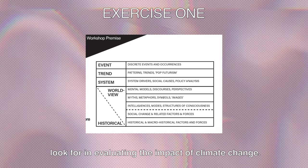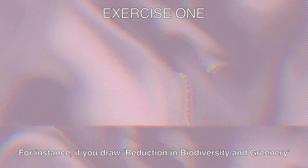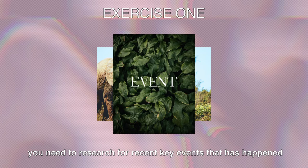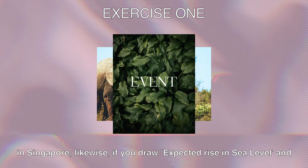For instance, if you draw a reduction in biodiversity and greenery, and you've decided for events to be your mode of interpretation, you need to research for recent key events that have happened that are related to the reduction in biodiversity and greenery in Singapore.